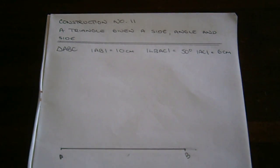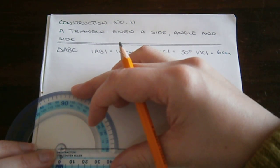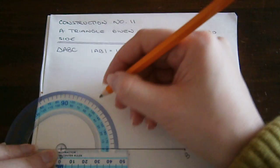Next, we use our protractor, placing it on point A, lining it up with line AB. We'll draw an angle of 50 degrees.